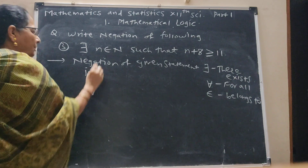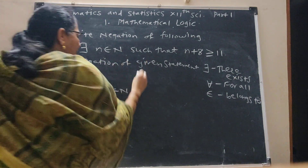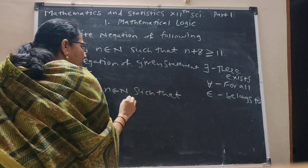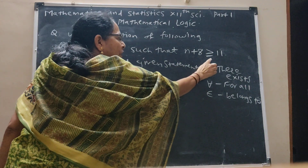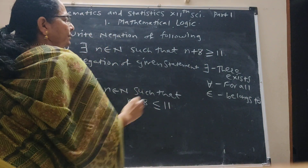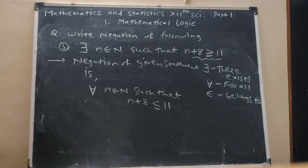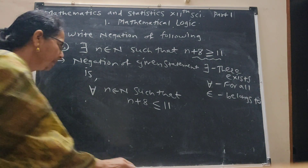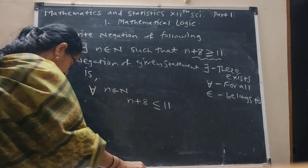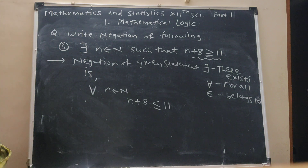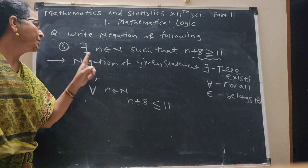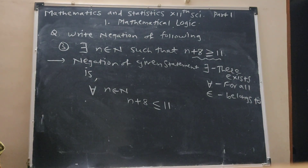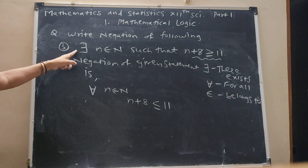The negation is: for all n belonging to N, n plus 8 is not satisfied. So the negation of 'there exists n ∈ N such that...' becomes 'for all n ∈ N, such that n is not...'. Remember: negation changes 'there exists' to 'for all', and 'for all' to 'there exists'.